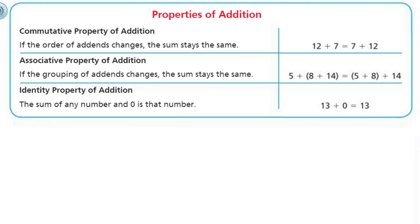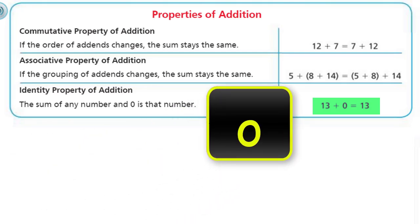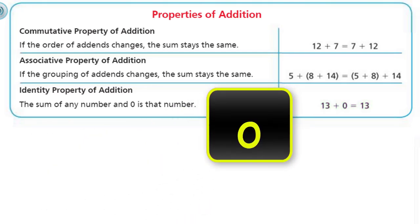Next, we have the identity property of addition. Identity — who am I? The identity property of addition says the sum of any number and 0 is that number. You can't change it. 13 plus 0 equals 13. It seems simple, but it's important that you know this property because you'll be using it later in your educational career.